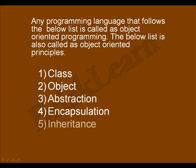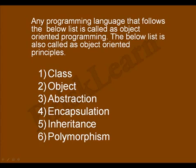Fifth is inheritance. Sixth is polymorphism. So if any programming language follows these six principles, it is called as object oriented programming or object oriented principles.